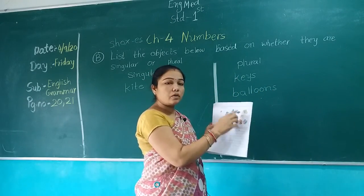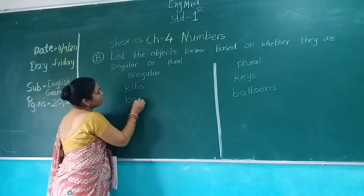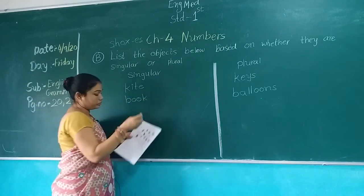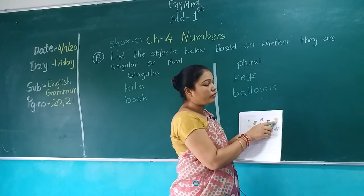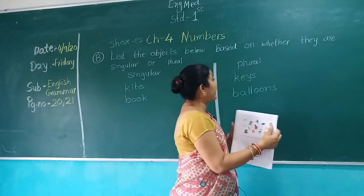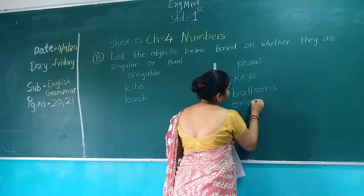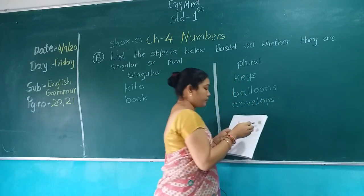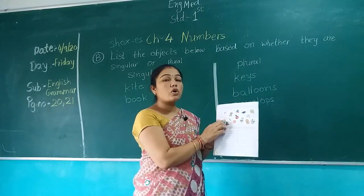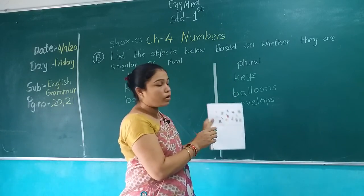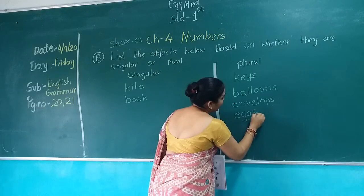How many books are there? Only one. So we write in the singular column: B-O-O-K, Book. How many envelopes are here? 1 and 2. So we write in the plural column: Envelopes. How many eggs are here? 1 and 2. It is called plural form. Eggs: E-G-G-S.